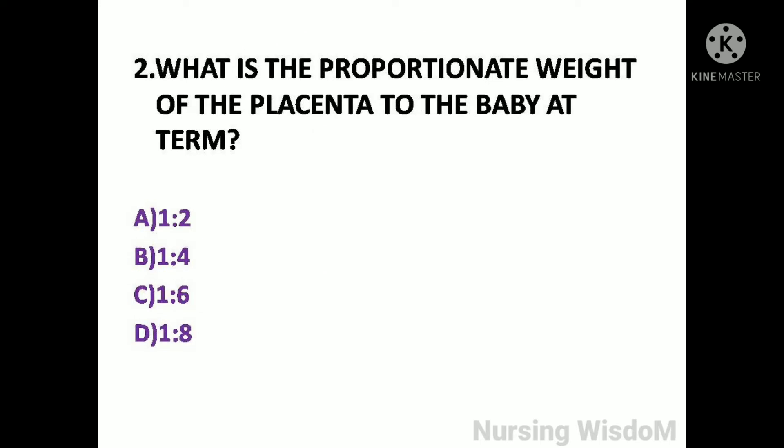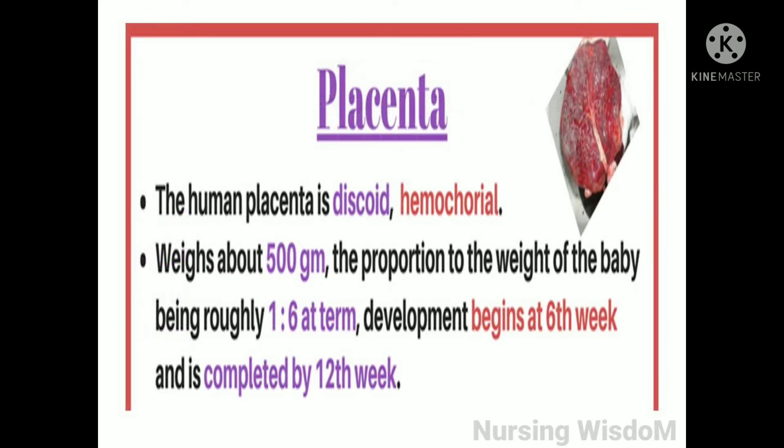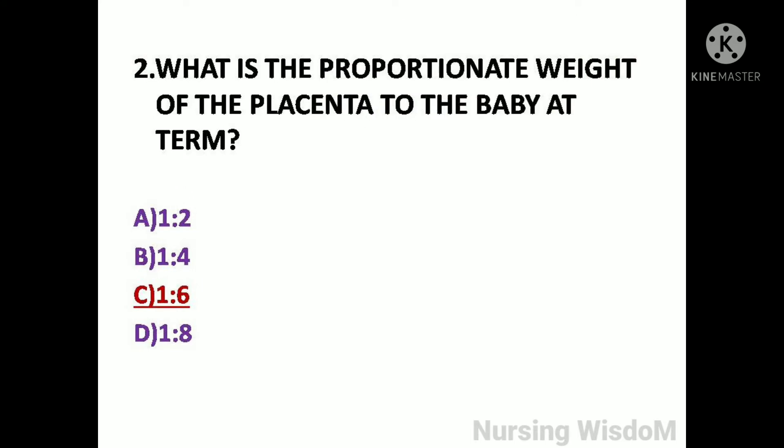Next question: What is the proportionate weight of the placenta to the baby at term? Option A: 1 is to 2. Option B: 1 is to 4. Option C: 1 is to 6. Option D: 1 is to 8. The human placenta is discoid, hemochorial, weighing about 500 grams. The proportion to the weight of the baby is roughly 1 is to 6 at term. Development begins at the 6th week and is completed by the 12th week. So here the answer is option C, 1 is to 6.